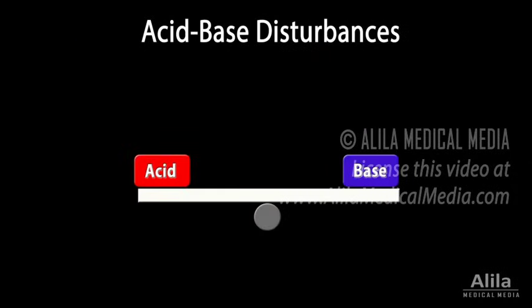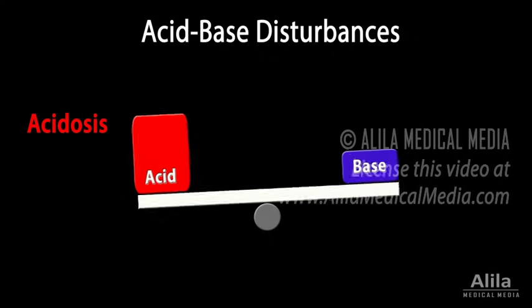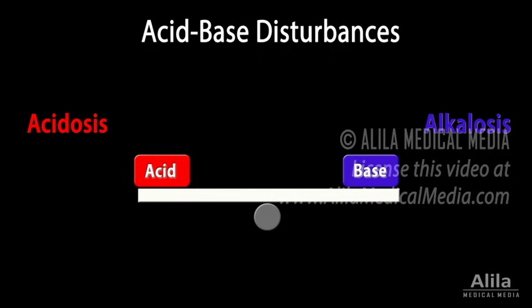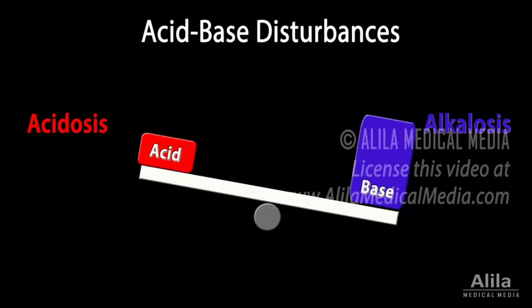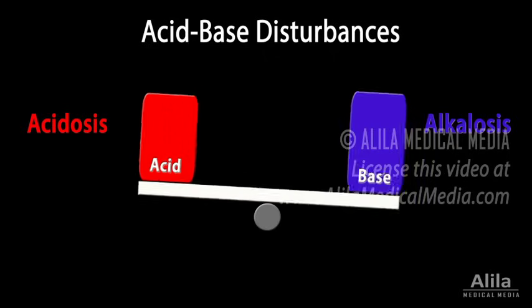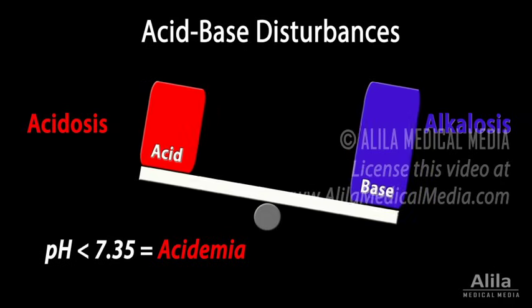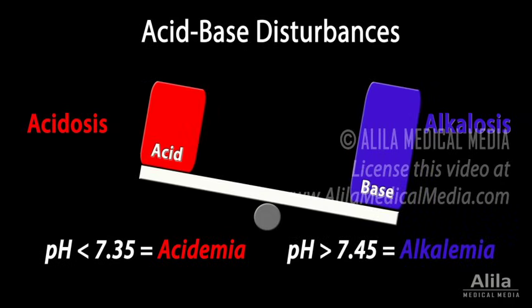Pathologic changes may cause acid-base disturbances. Acidosis refers to a process that causes increased acidity, while alkalosis refers to one that causes increased alkalinity. It's not uncommon for a patient to have several processes going on at once, some of them in opposite directions. The resulting plasma pH may be normal, too acidic — called acidemia — or too basic — called alkalemia.